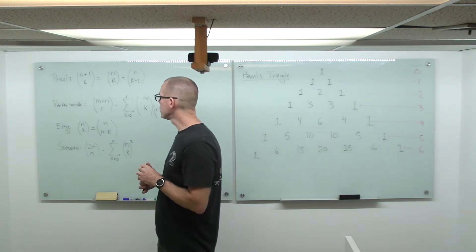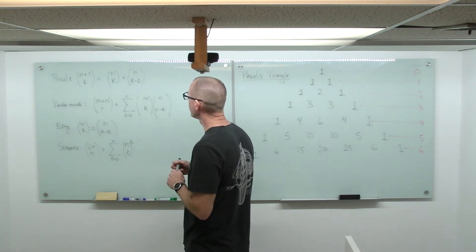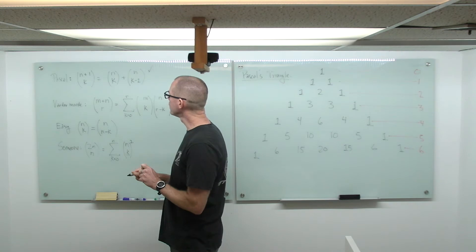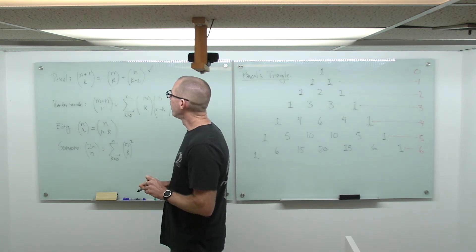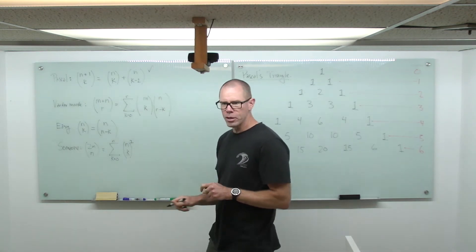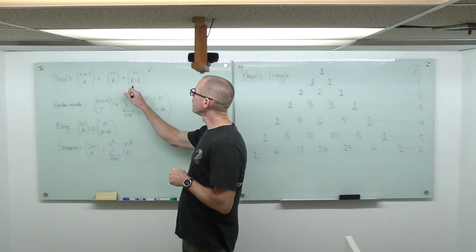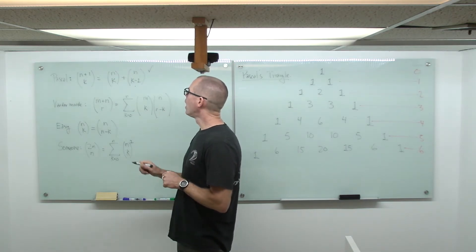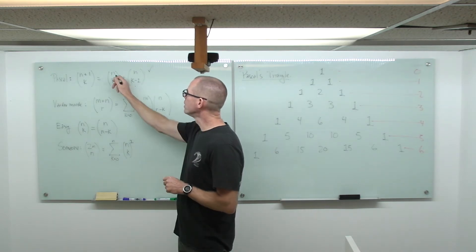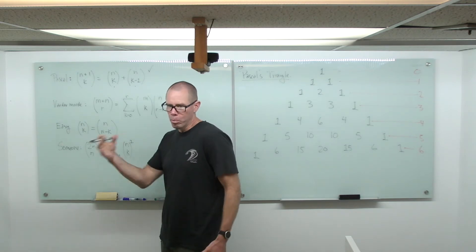Let's start with a brief review, starting with something we proved last class: Pascal's identity, which says (n+1) choose k equals (n choose k) plus (n choose k-1). You can remember that by saying: if I have a set of size n+1, treat one element as special. When I take a subset, either I include the special element and k-1 other elements, or I don't include the special element and take all my elements from the non-special ones.